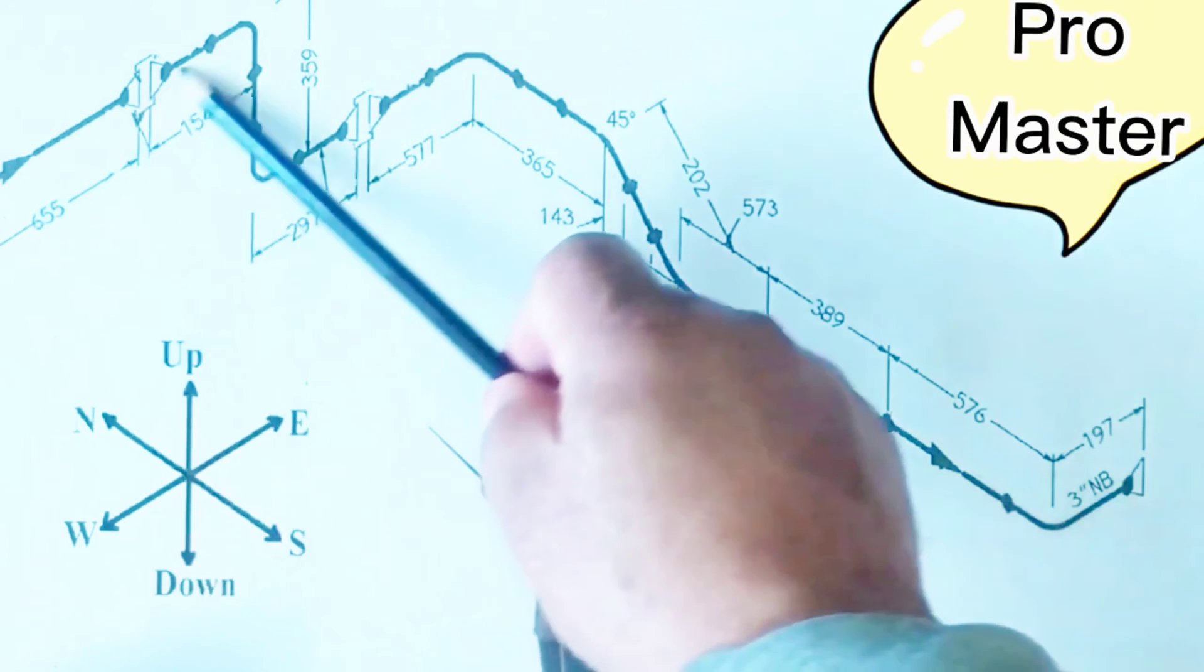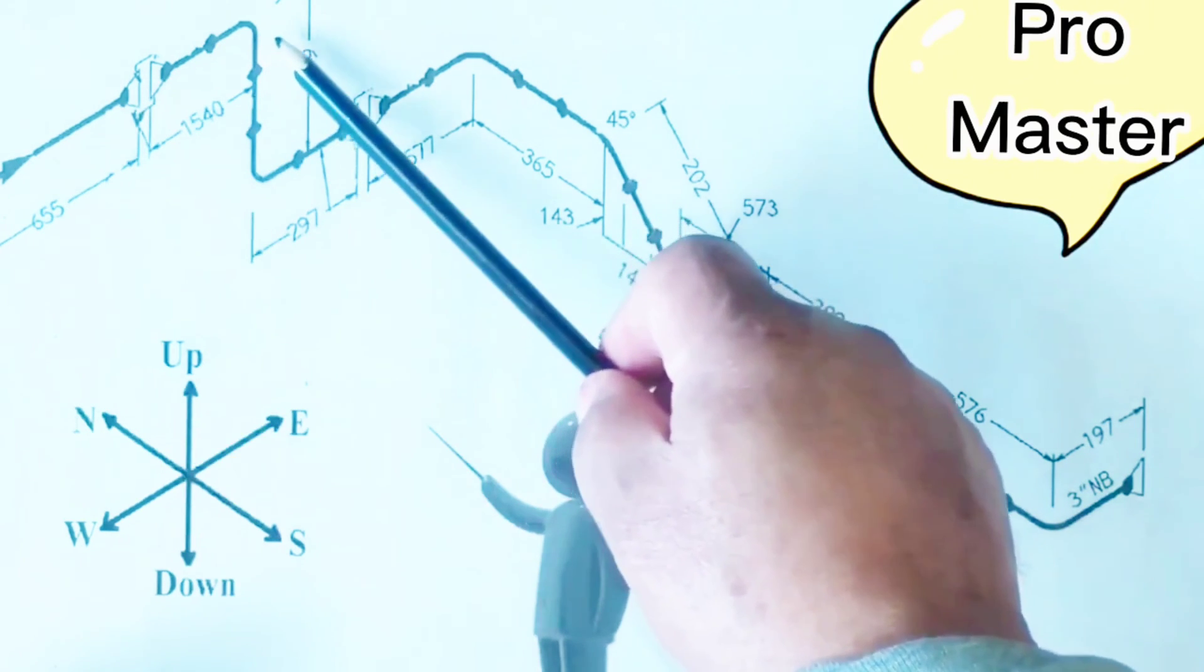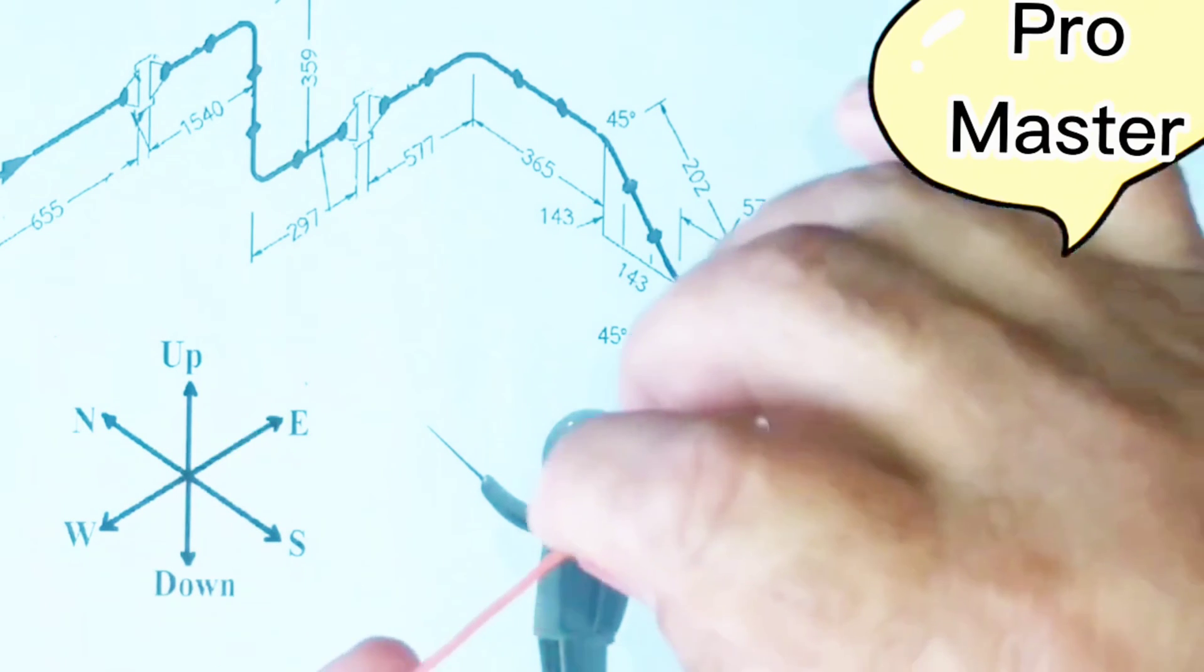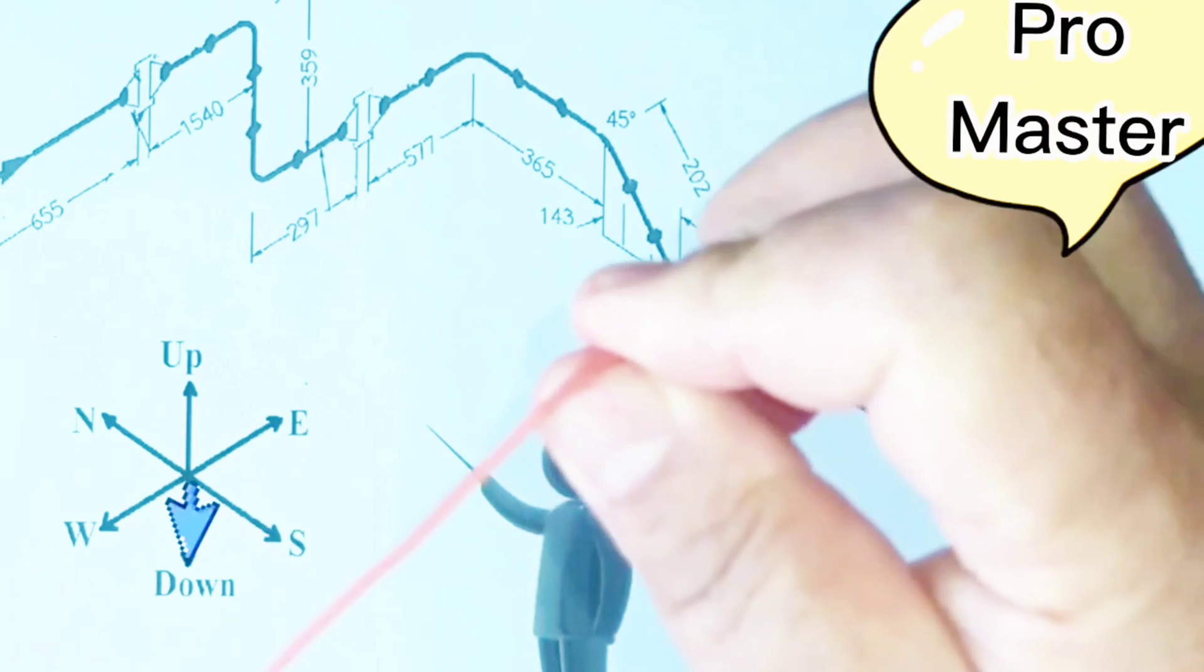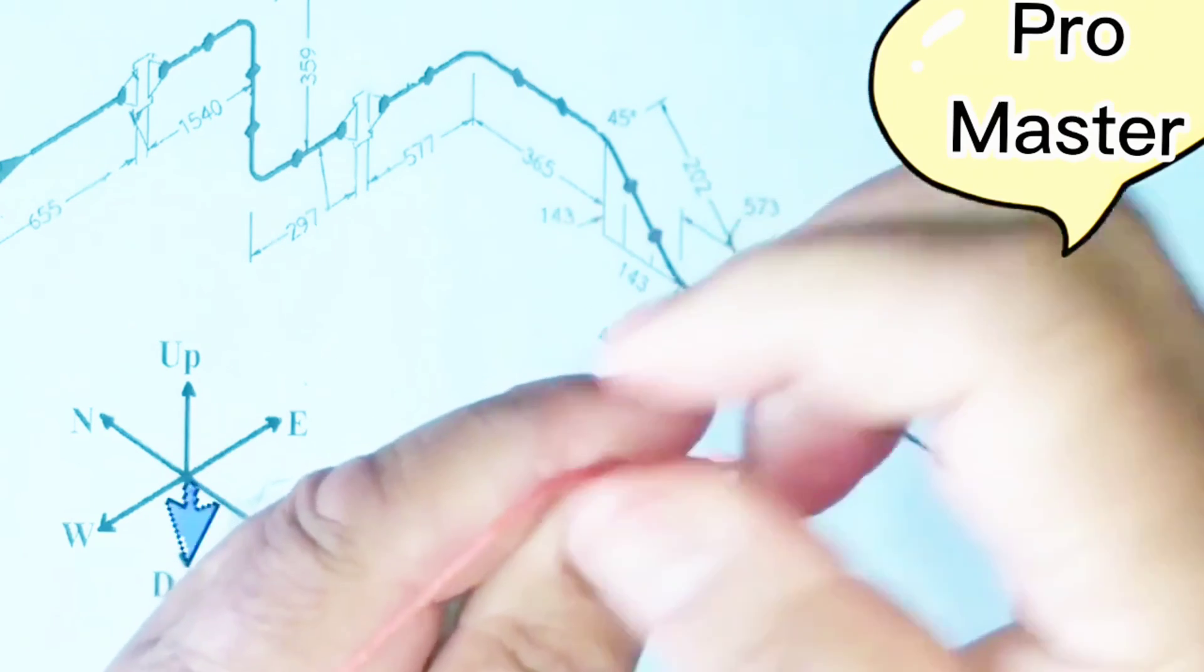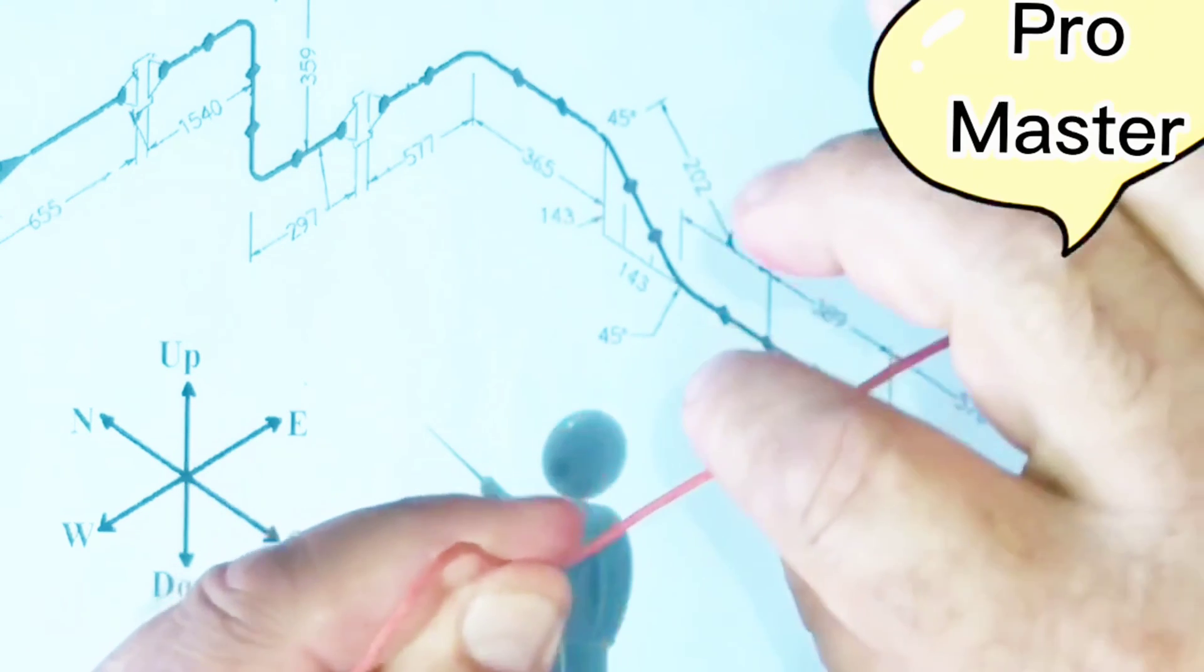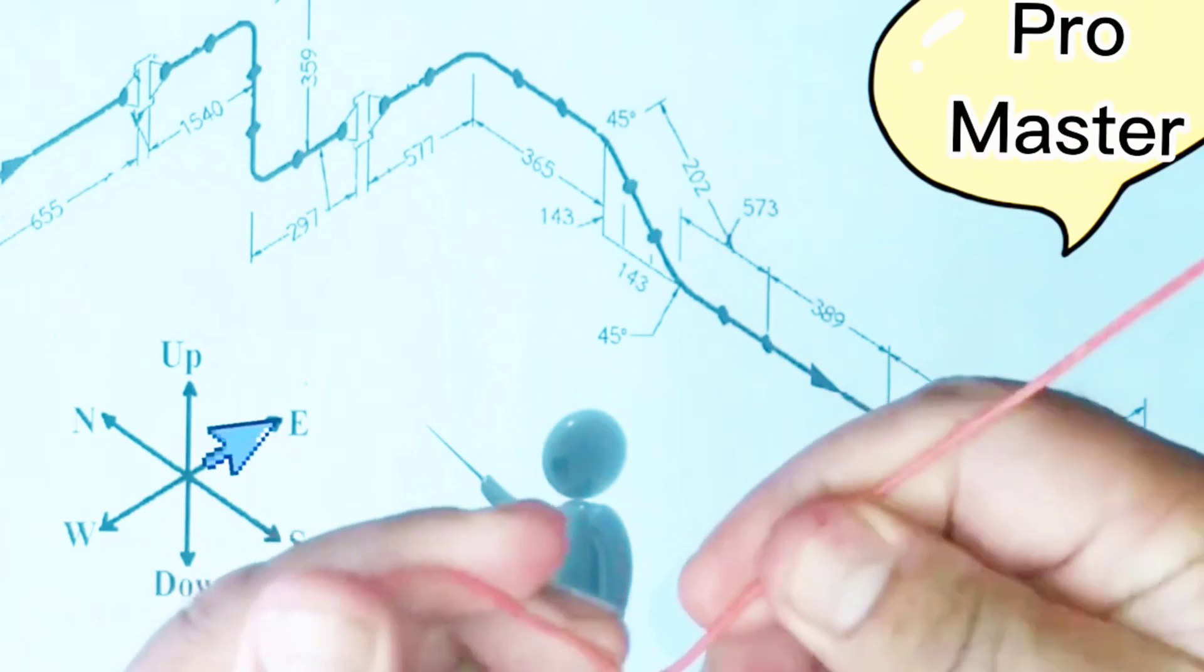Since the pipeline is traveling to the east direction, we hold the wire in the east direction. From here we are bending the wire to down. Then we are bending the wire again to the east direction.